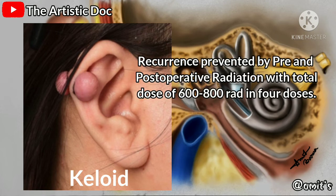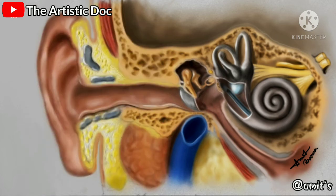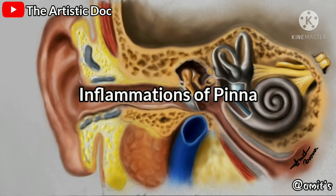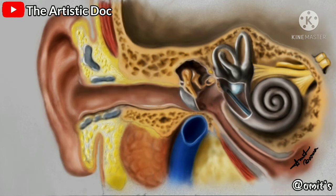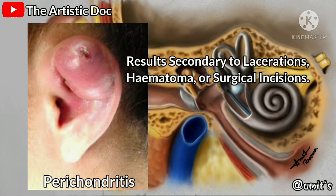Keloid is usually seen on the lobule following trauma or piercing. Recurrence can be prevented by using 600 to 800 rads delivered in four doses in pre- and postoperative sessions after excision. Steroids can also be given. Now let's start the inflammatory disorders.